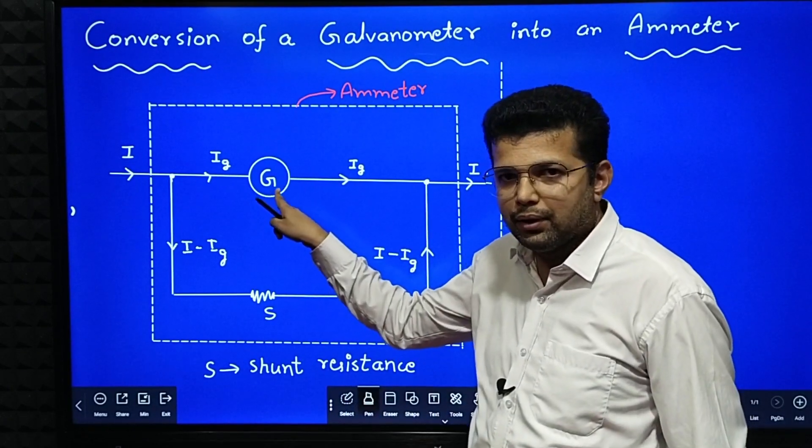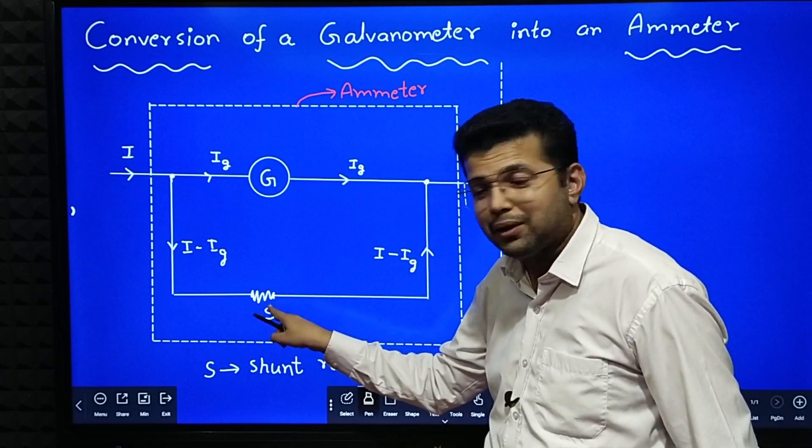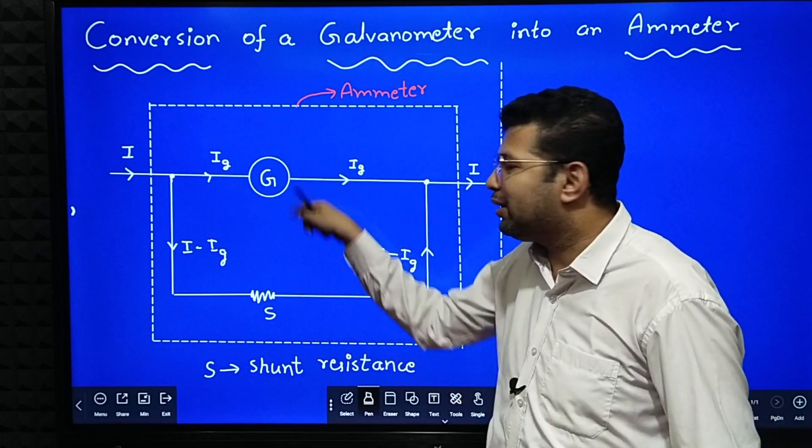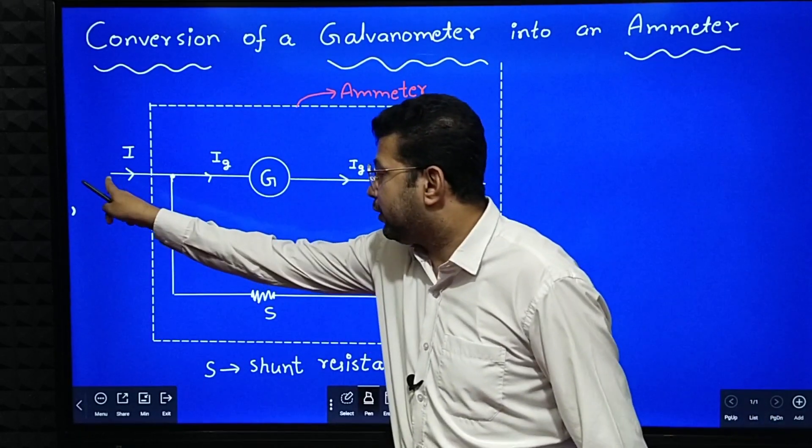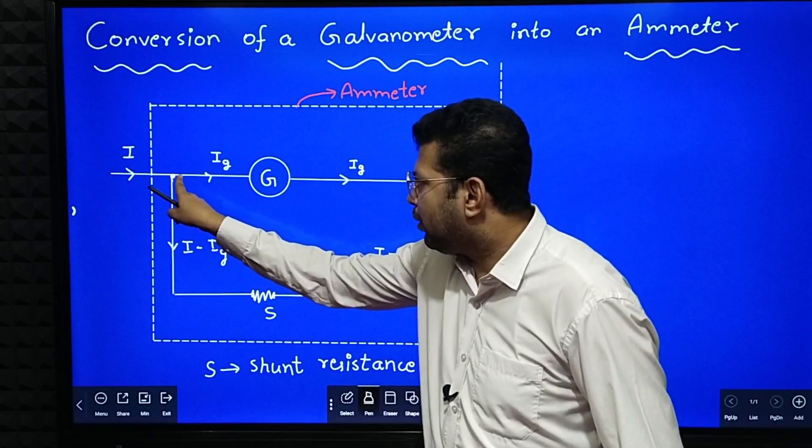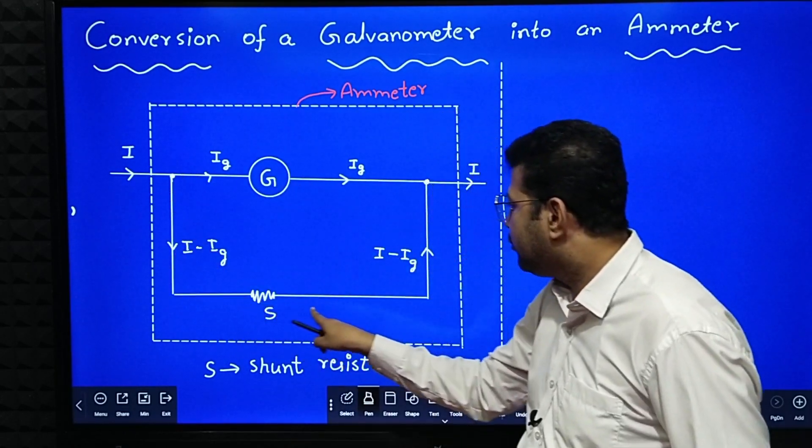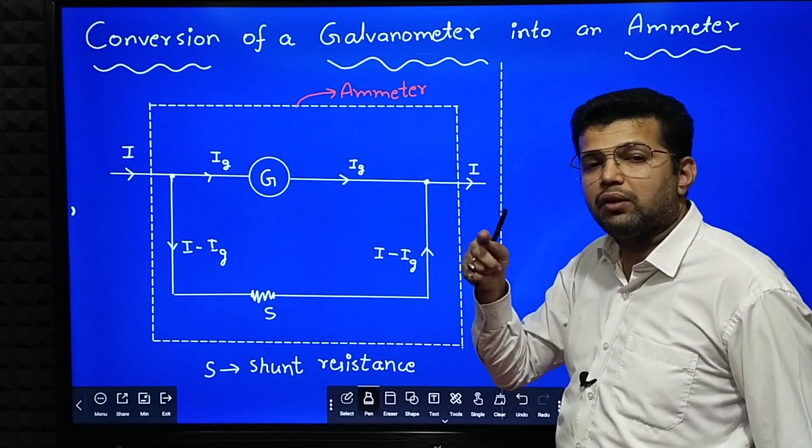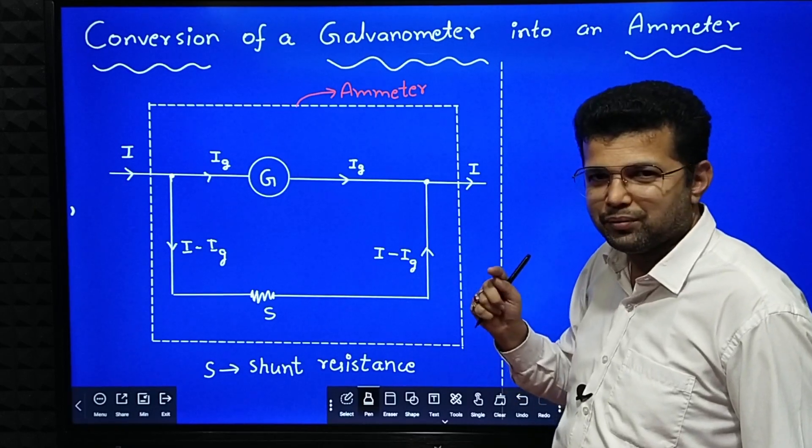That is why what we have to do is, we should take a galvanometer, then we should connect a very low resistance in parallel, so that the resistance of this entire system decreases, because in parallel combination resistance decreases. Then if a very large amount of main current comes here, a small amount of current goes through the galvanometer, and remaining all the current flows through the parallel resistance. So that we are not disturbing the actual current in the circuit too much.